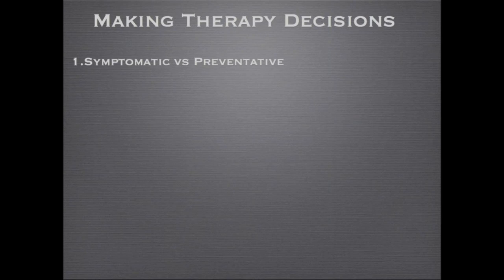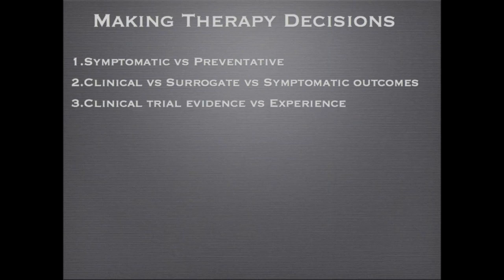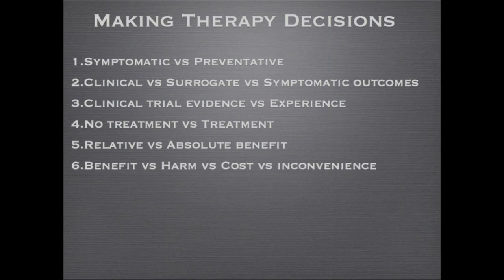Making drug therapy decisions requires you to think about a number of things. Symptomatic versus preventative — those are two different things. You need to consider whether there are clinical benefits, surrogate benefits, or symptomatic outcomes. What's the outcome you're trying to change? Clinical trial evidence — do you have clinical trial evidence or experience? What happens if you do nothing, and what happens if you give treatment? You've got to look at relative and absolute benefits, and you must think of the benefits, the harms, the costs, and the inconvenience.